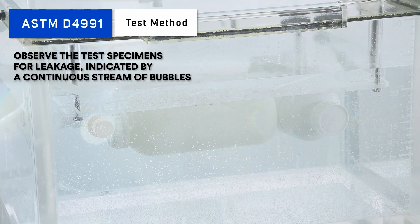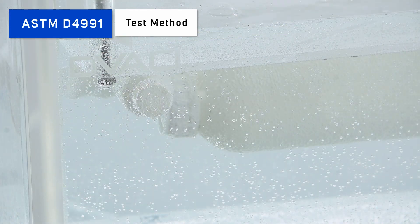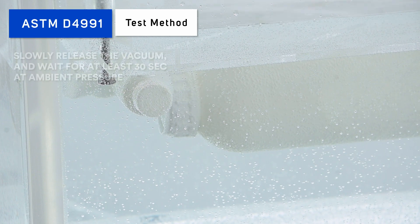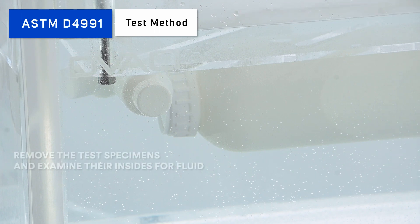Carefully observe the test specimens for leakage indicated by a continuous stream of bubbles. Maintain the vacuum for the required time, then slowly release it and wait for at least 30 seconds at ambient pressure, before removing the test specimens and checking if there is any fluid inside them.